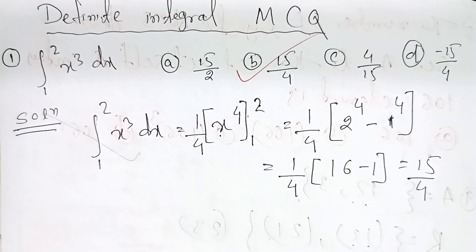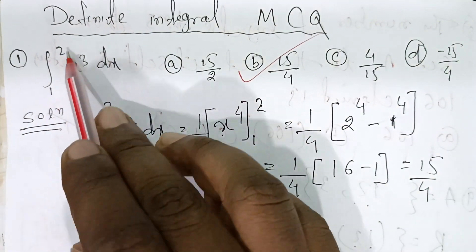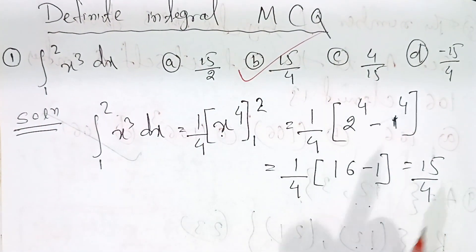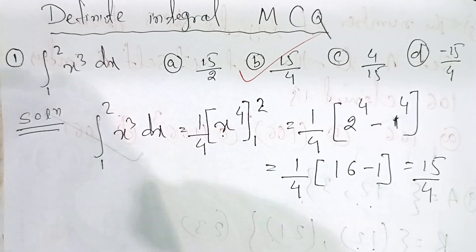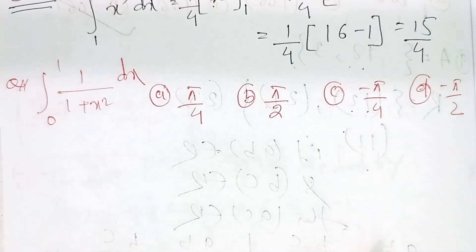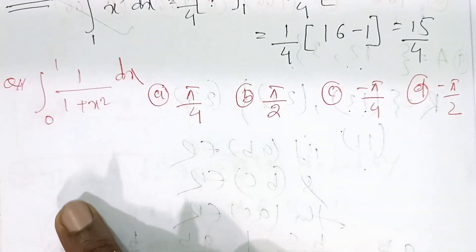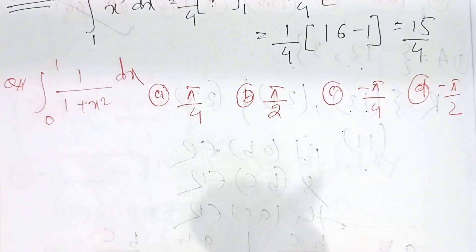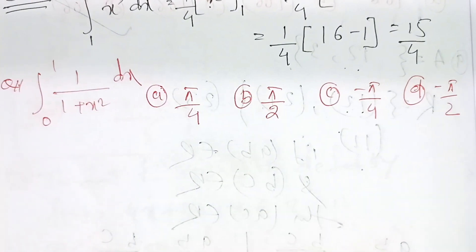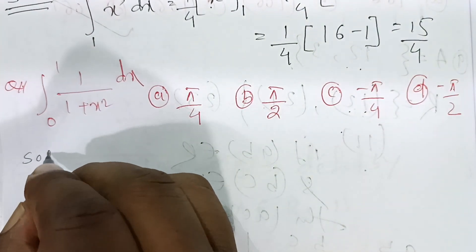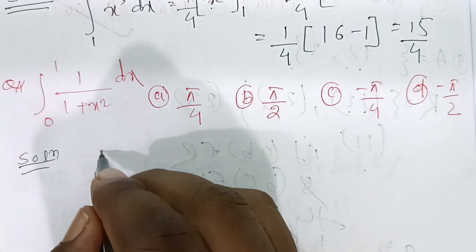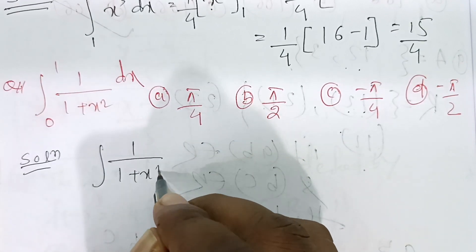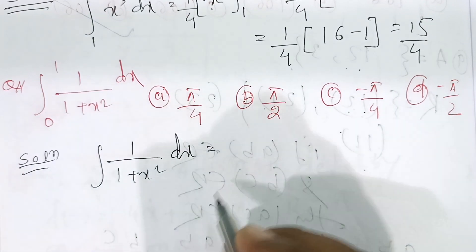This is the first question done. Integration of 1 to 2, x³ dx equals 15 by 4. Next question: integration of 0 to 1, 1 by (1 + x²) dx. This is the third question. It's a direct formula — the solution follows.